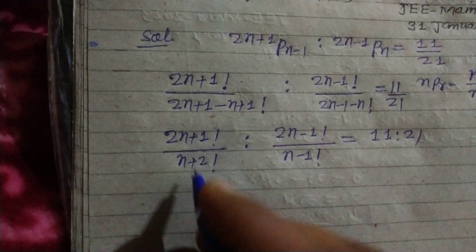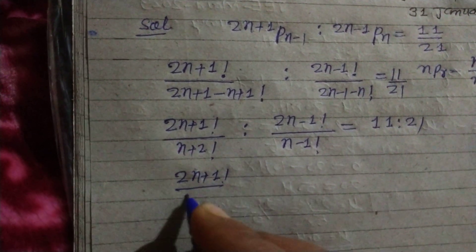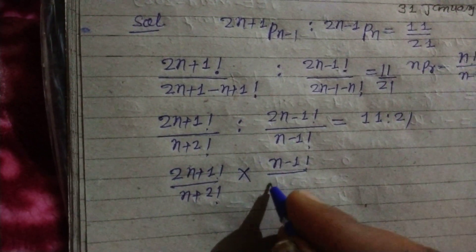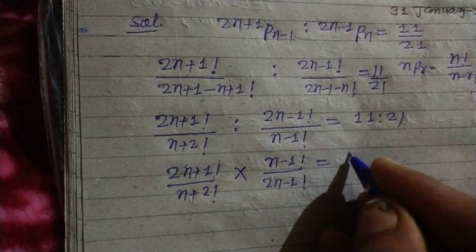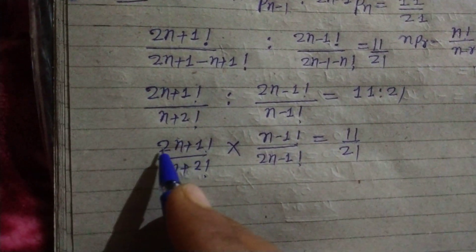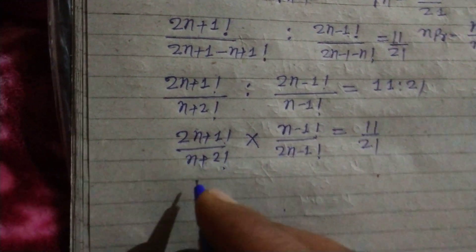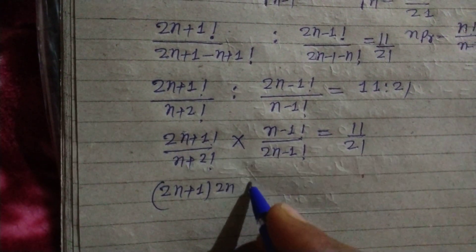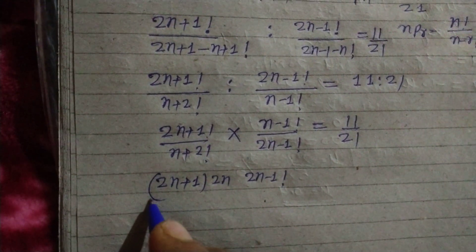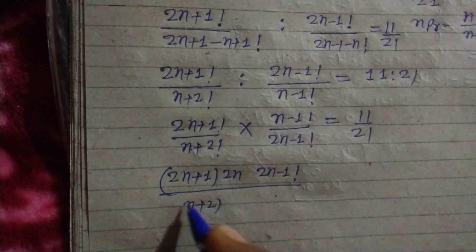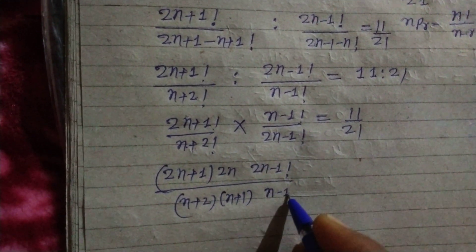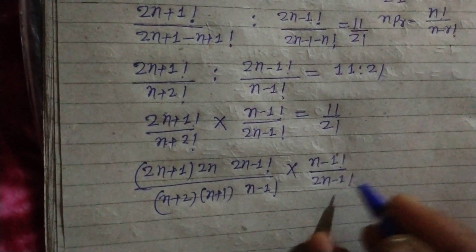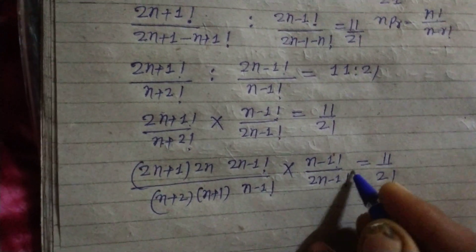Now we write it as (2n+1)! upon (n+2)! into (n−1)!, reversed in ratio with (2n−1)!, equal to 11 upon 21. We take out (2n+1) from the factorial, leaving 2n inside. So we have (2n+1) · 2n · (2n−1)! upon (n+2) · (n+1) · (n!) · (n−1) · (n−1)! upon (2n−1)!, equal to 11 upon 21. The (2n−1)! terms cancel.